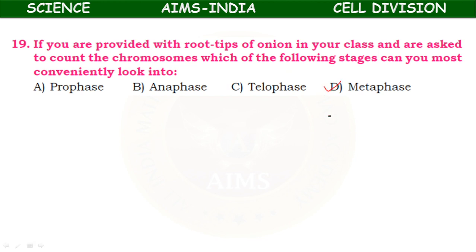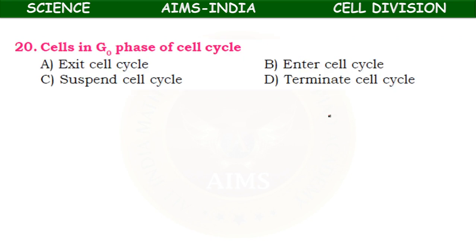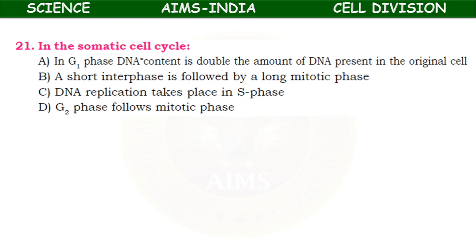Cells in G0 phase of the cell cycle — exit cell cycle, enter cell cycle, suspend cell cycle, or terminate cell cycle? They exit the cell cycle. G0 phase is commonly seen in mature RBCs and neurons.